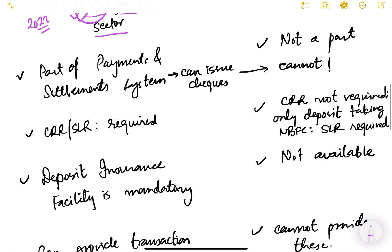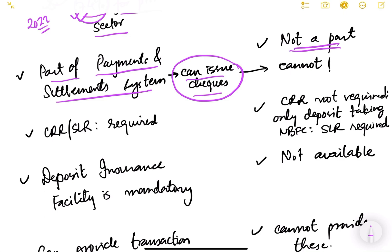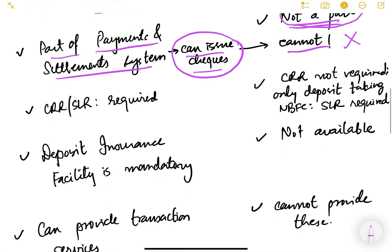Banks are part of the payments and settlement system, and therefore they can issue cheques. NBFCs are not part of the payments and settlement system, and therefore they cannot issue cheques.